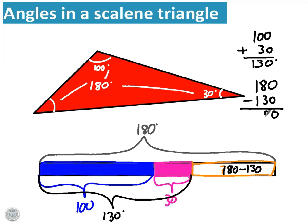What do you get? 50 degrees. So the angle over here, the missing one, is 50 degrees. And let's just check when you add 50 to 100 to 30, you get 180.